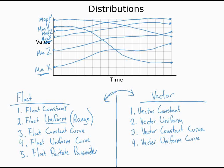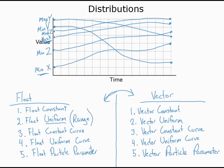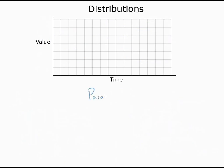The final vector distribution type is the vector particle parameter, which again provides external control from places like Matinee or Kismet. Parameters are a special case and warrant a bit of special discussion, so let's clean off the whiteboard and look at parameters specifically. We'll also demonstrate both Matinee and Kismet-driven parameters later in this video series.